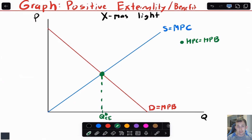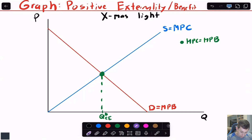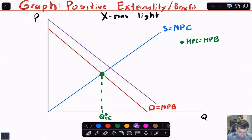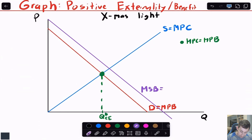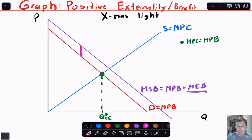Now we're going to say there's a positive externality on the demand side — there's an extra benefit, because other people get to enjoy those lights. This marginal private benefit curve doesn't currently capture the fact that other people get benefits from lights on someone's house, and those people weren't directly involved in that decision. So we're going to shift this demand curve out by some external benefit. That new curve — shown in purple — is the marginal social benefit, which equals marginal private benefit plus marginal external benefit. The distance between the two demand curves represents how much extra enjoyment other people get from one neighbor putting up Christmas lights.